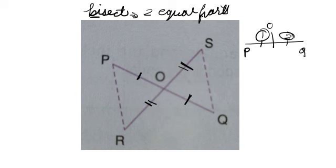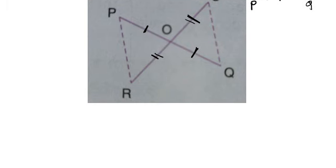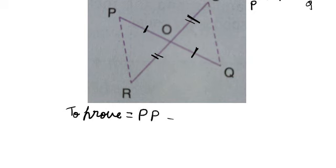Once we have proven the congruency of the two triangles, then PR and SQ will be equal because they will be the corresponding parts of the triangles — that is CPCTC. So what do we have to prove here? PR equals SQ.